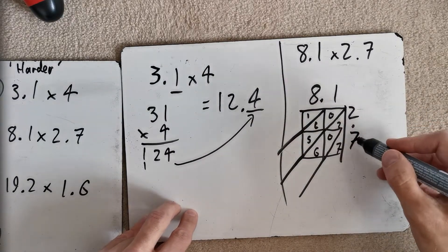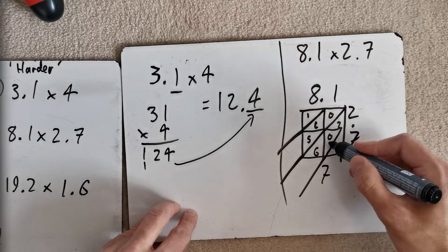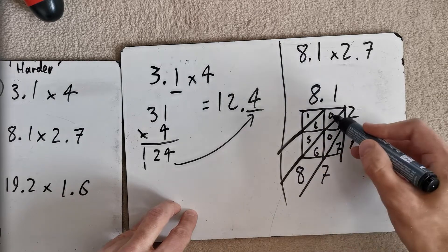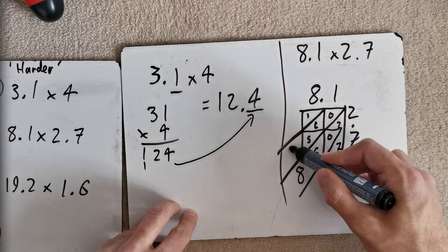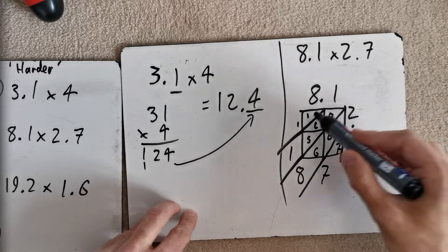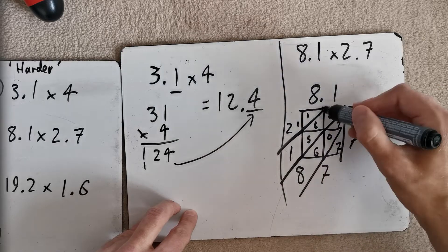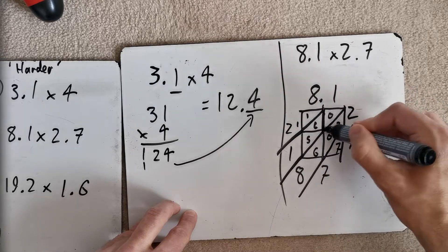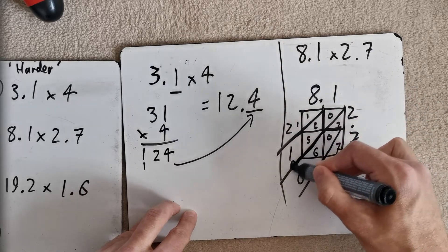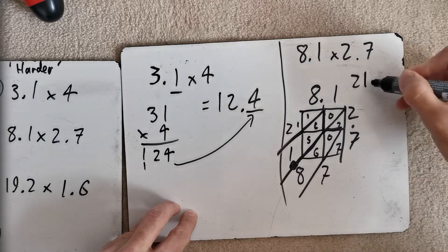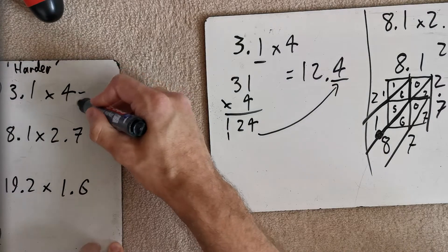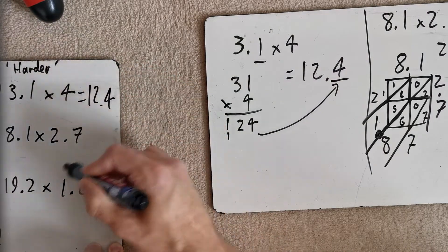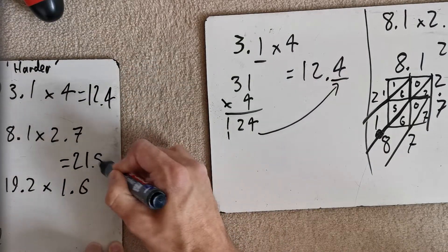So, add down the diagonals. 7 on its own. 2 and 0 and 6 is 8. 0 and 6 and 5 is 11. So, we put a 1 there and carry the 1. 1 and 1 is 2. Des goes this way. Mel goes this way. They join up together. They go there. So, it's 21.87. So, that one, sorry, was 12.4. This one is 21.87. I do hope that is correct. I did rush that a little bit.